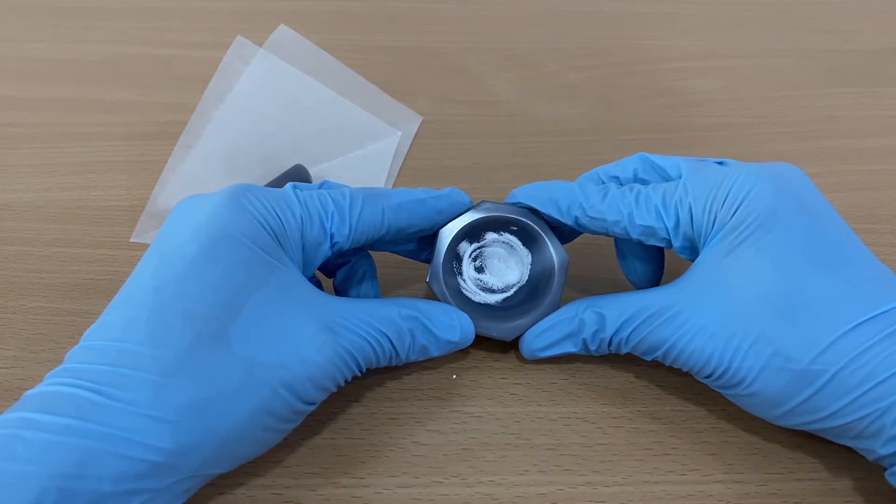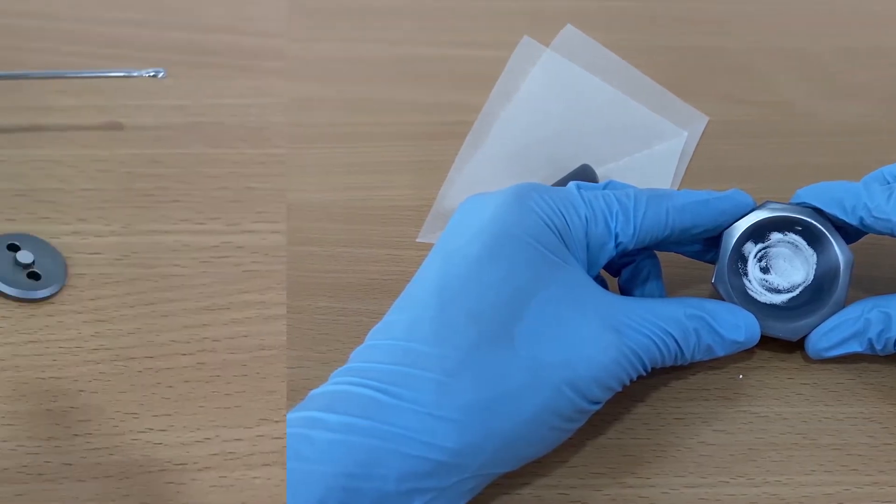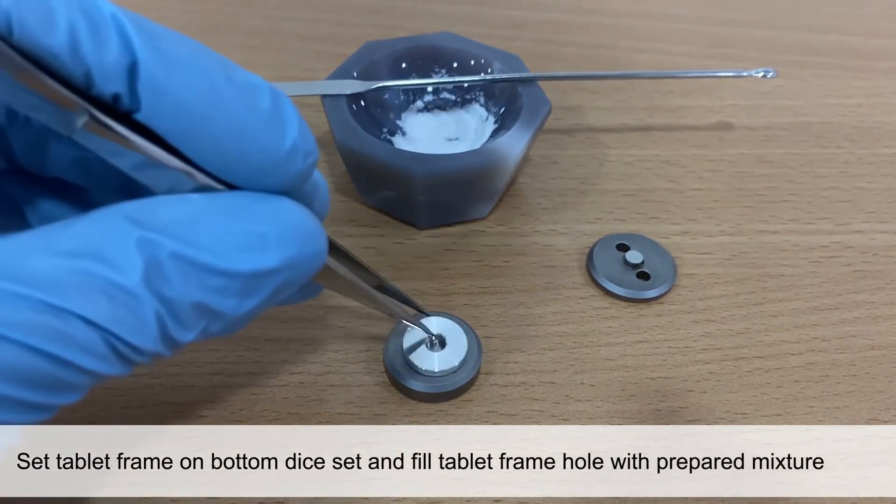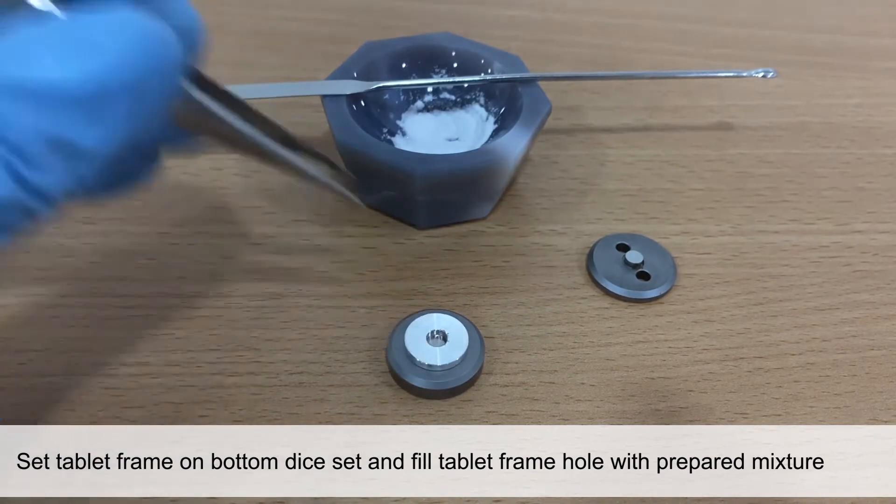Now, we move on to assembling the dice set. Set the tablet frame on the bottom dice set and fill in the tablet frame hole with the KBr and sample mixture.